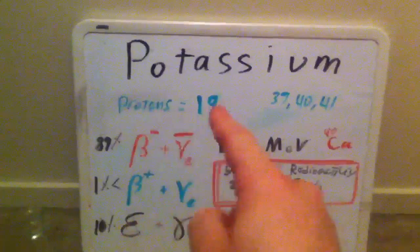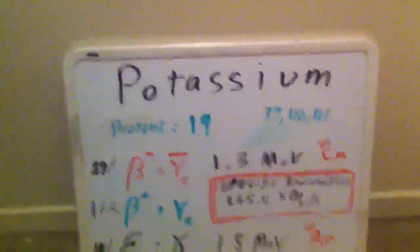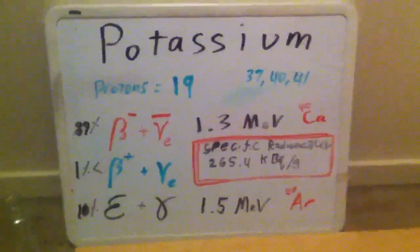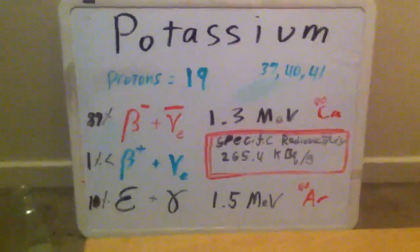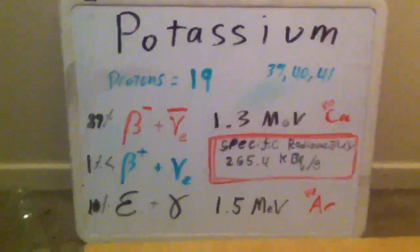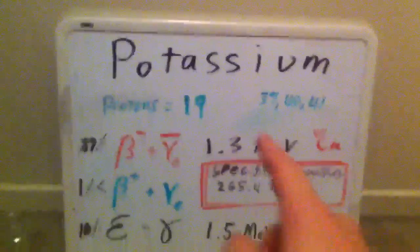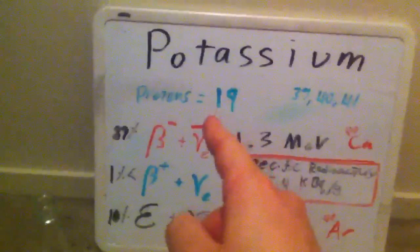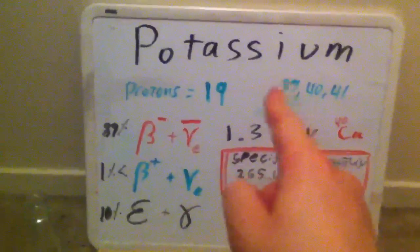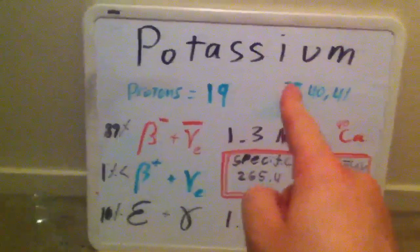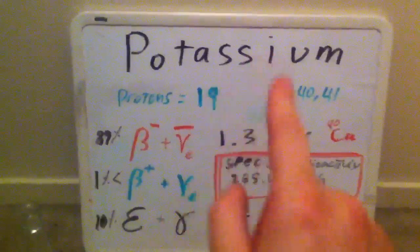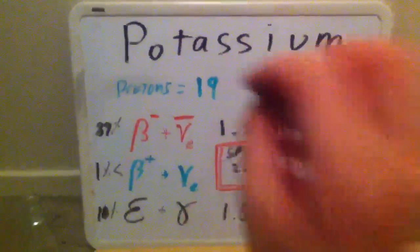Potassium has 19 protons and about 19 electrons, and of course that is what makes it potassium. The neutrons are not necessarily equal to the protons all of the time, which is what creates isotopes. A total of 19 protons plus 20 neutrons equals 39, which is the mass number of the most common form of potassium. Remember, protons plus neutrons equal mass number.